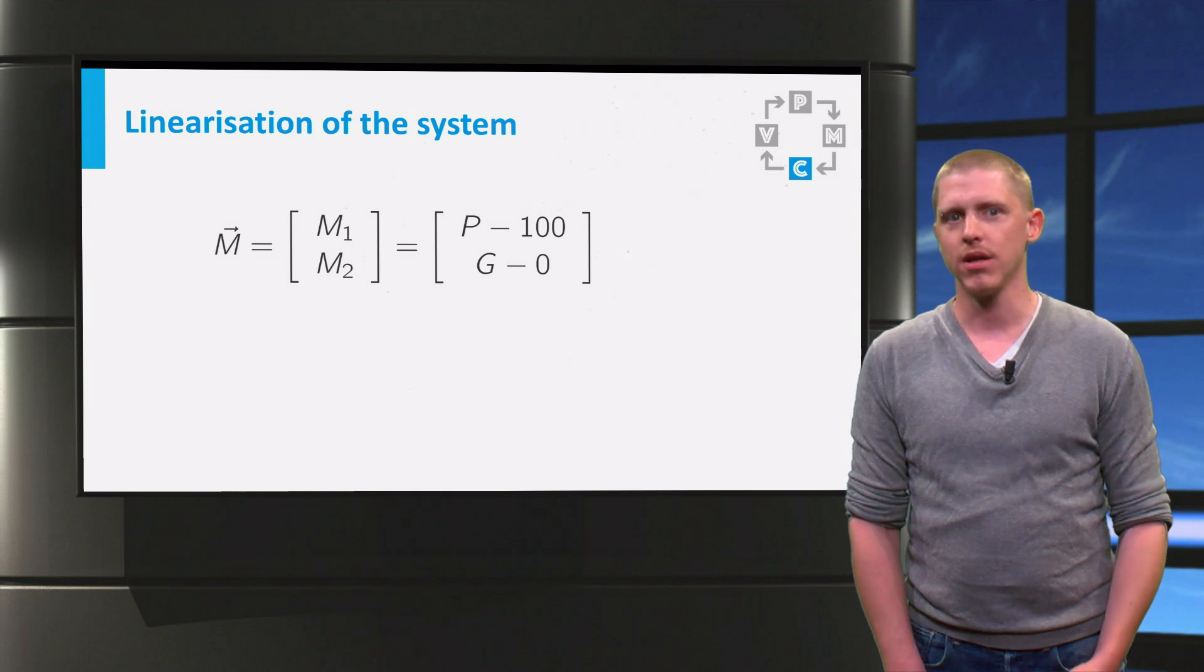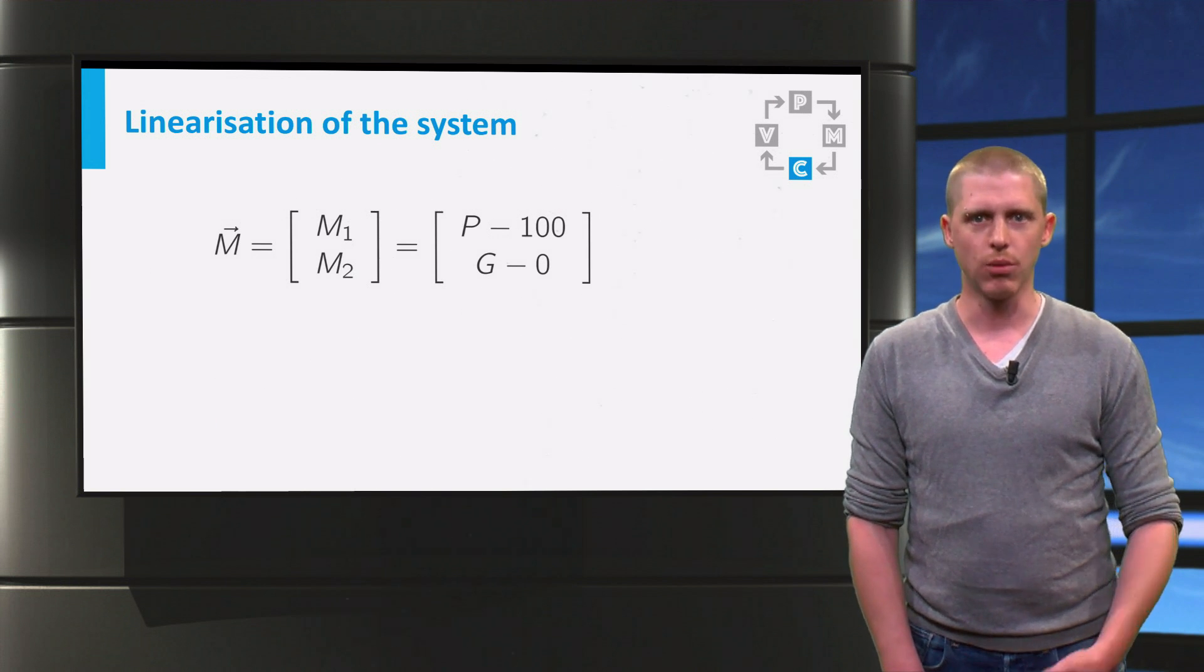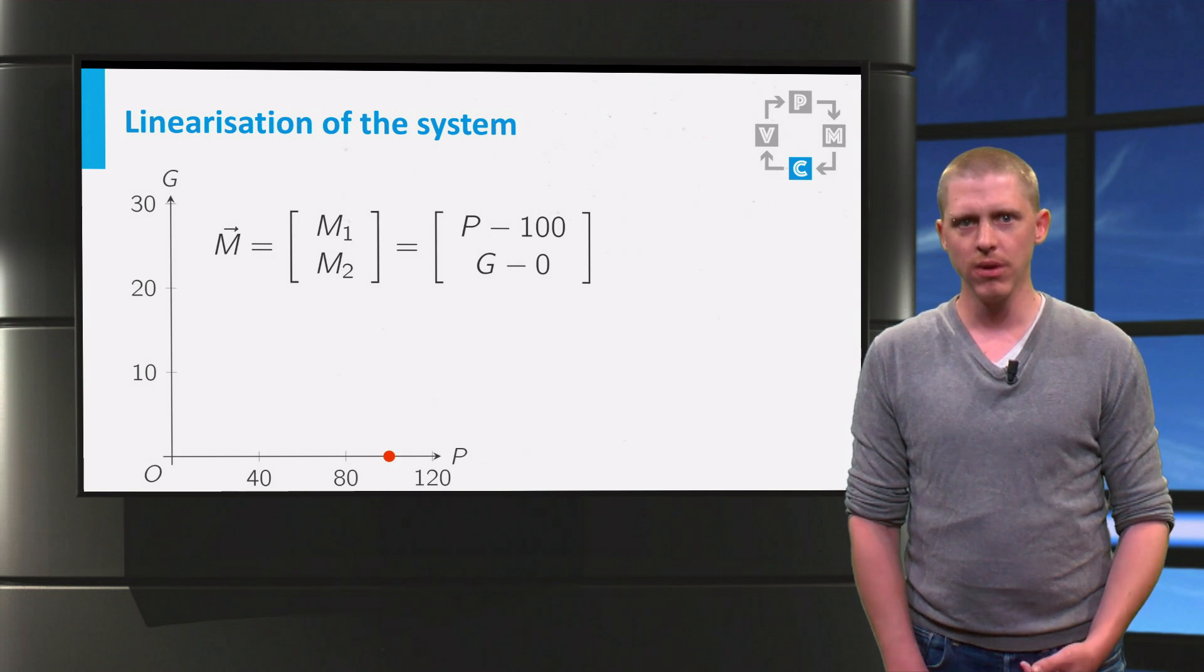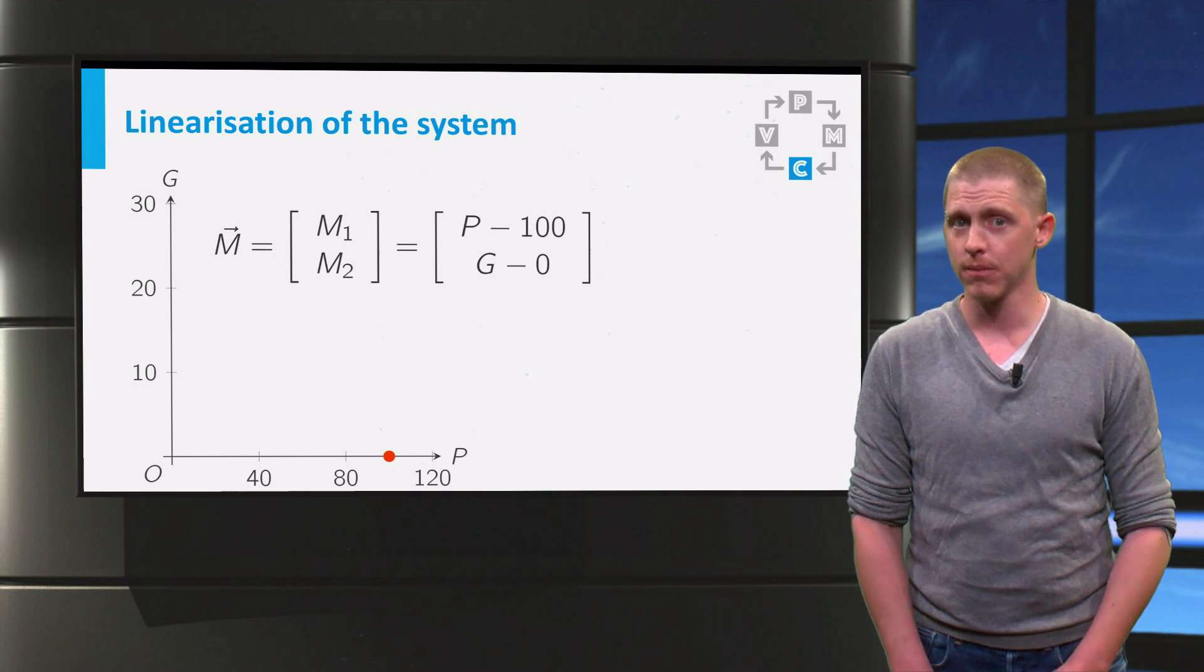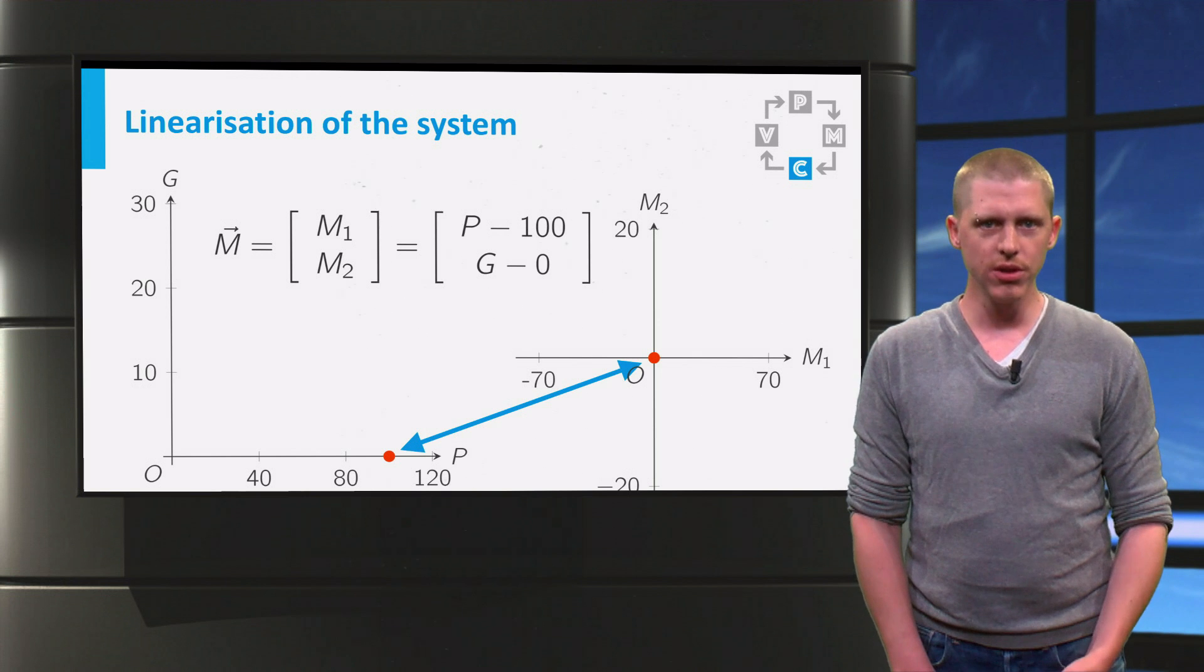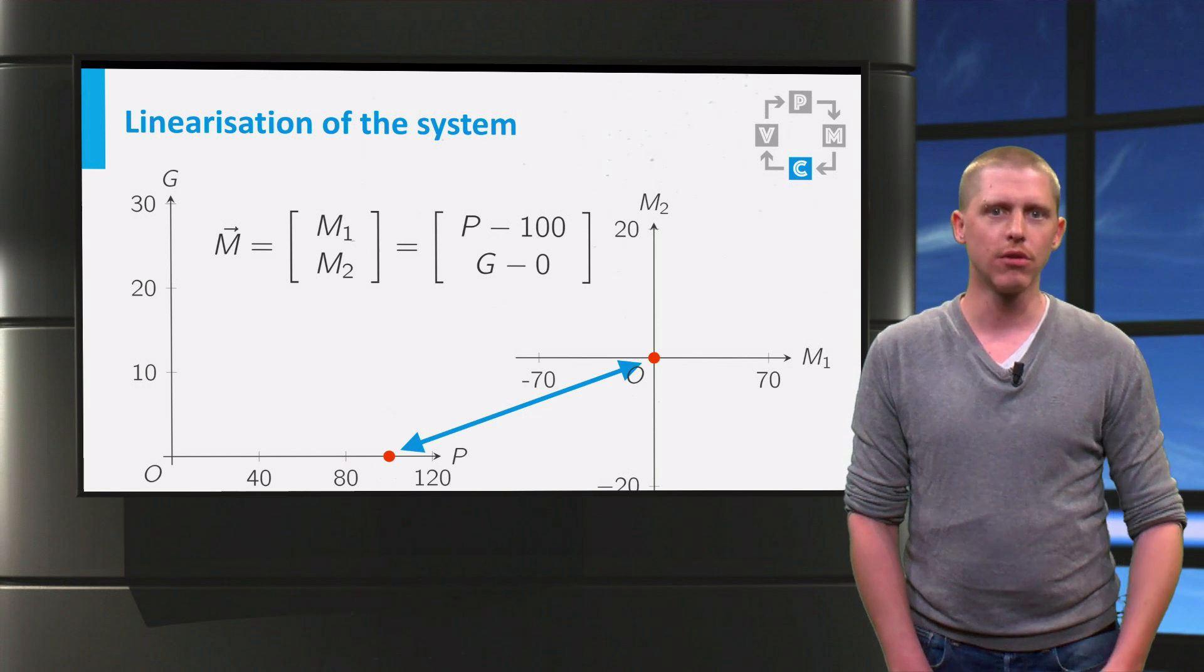m is in this case defined as a vector with p-100 and g-0. So the point 100-0 in the phase plane of p and g, which you see on the left, represents the origin in the phase plane of m, which you can see on the right.